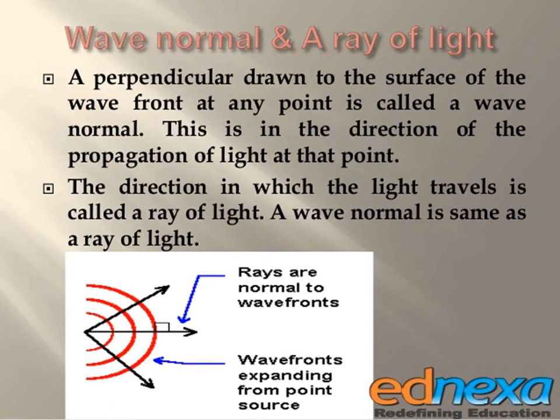The next point is the wave normal and ray of light. A perpendicular drawn to the surface of the wavefront at any point is called the wave normal. The direction in which the light travels is called the ray of light.